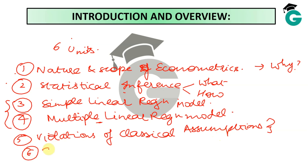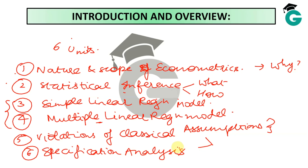The last unit is something called specification analysis. In my understanding, this particular unit can be combined with unit five, mostly because specification analysis is also a kind of — both of these units essentially talk about limitations to the modeling exercise. Unit five talks about limitations in the sense that some assumption you've made is not satisfied, while unit six talks about limitation in the sense that your model is wrongly specified — that's where the specification comes from. However, the videos won't be that intertwined because even though they fall under the same bracket of limitations, they're not exactly the same thing.